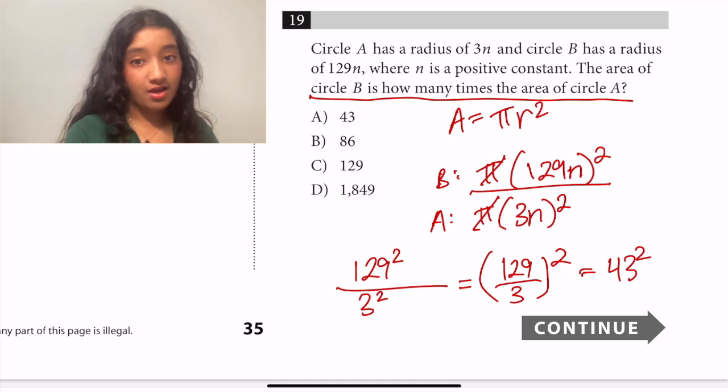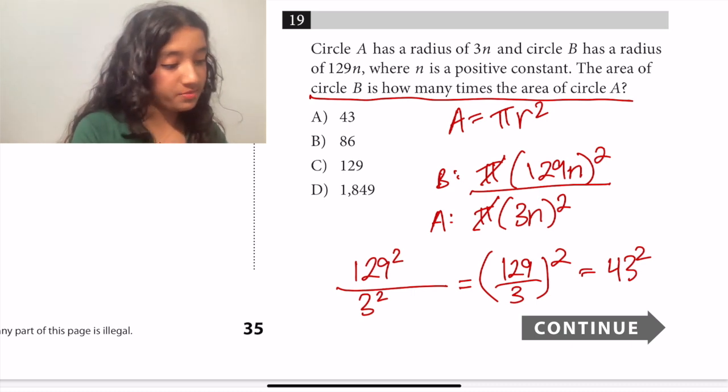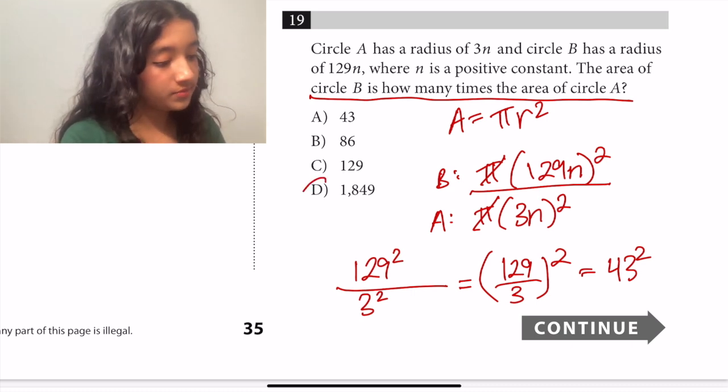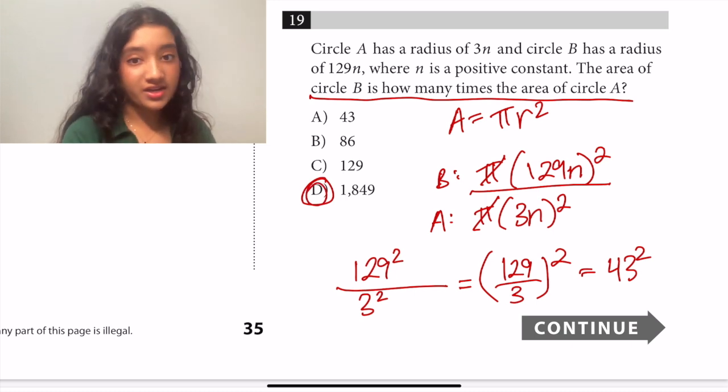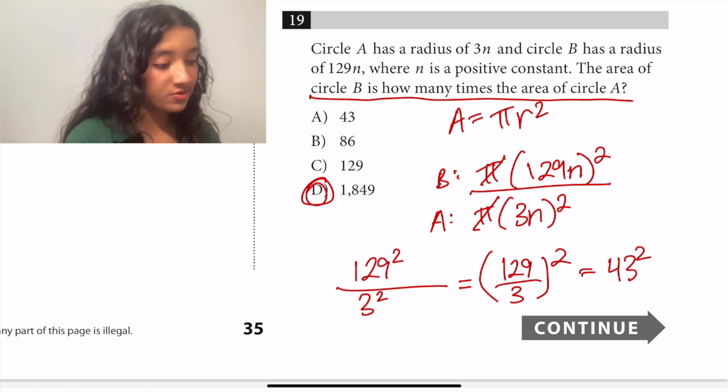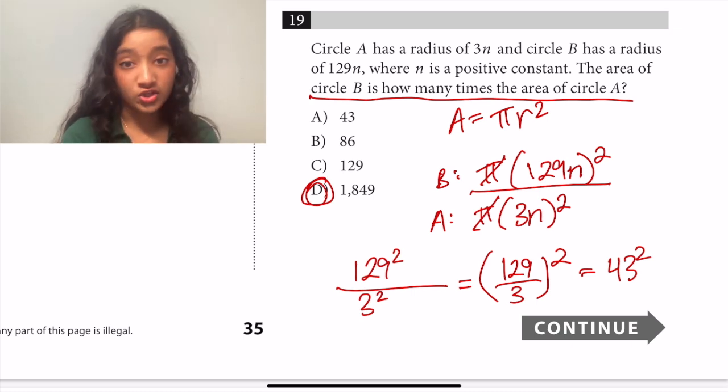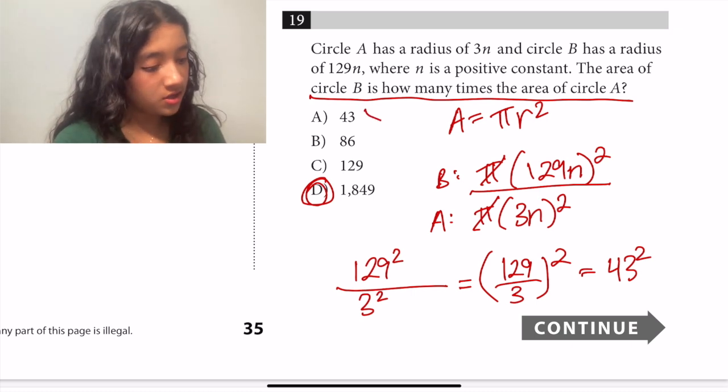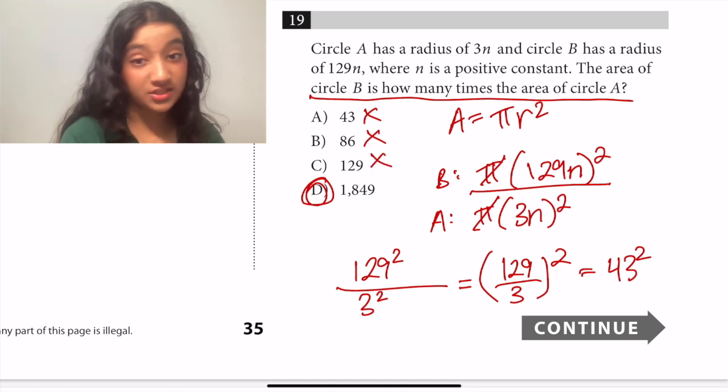And then out of the answer choices here we can see that the answer is option D because 43 squared is a pretty big number. If you think about 40 squared that would be 1,600 and it has to be even larger than that. So clearly all of the other options A, B, and C are wrong, leaving us with answer choice D.